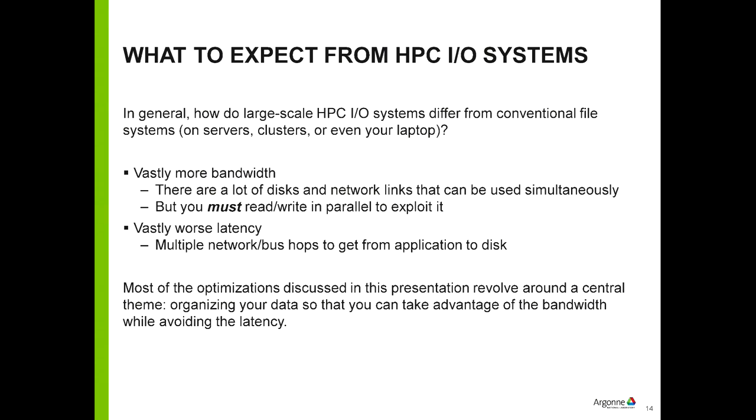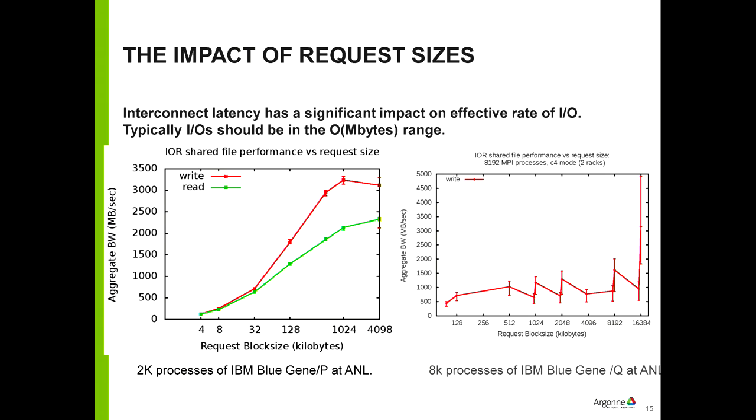A storage system with 7,000 to 8,000 hard drives has far more bandwidth than a conventional system, but any one of those drives is just a standard drive — not fast. The only thing that makes it fast is having many of them used simultaneously. A second surprise is that latency is much worse than on a normal system. On your laptop, opening a file and doing a small read is instantaneous, but in HPC systems there's a long path between your application and the actual disk. It gets going fast, but small operations have poor round-trip time.